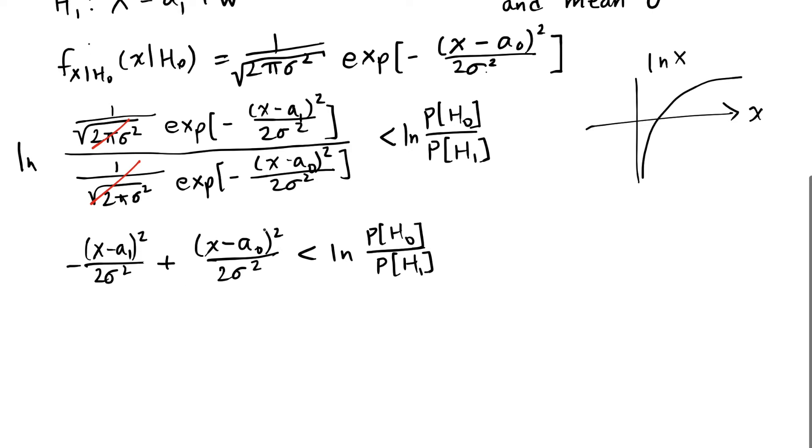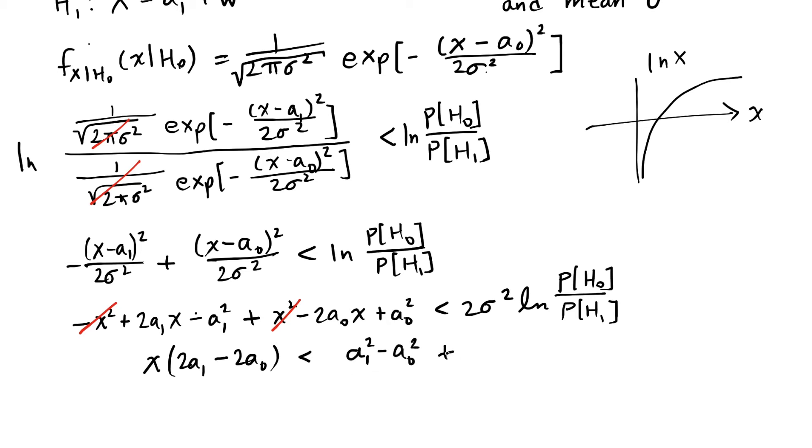And I'm going to multiply out the two sigma-squareds to both sides, and then work out the quadratics that are here. We're going to have these x-squared terms cancel, which is great because then I've got an x term and an a term, a constant term, that I'll move over to the other side.